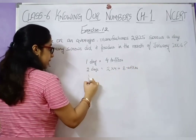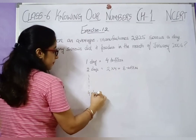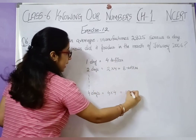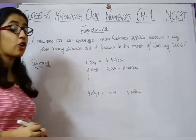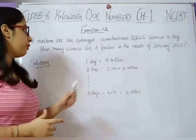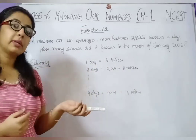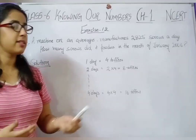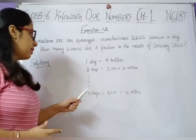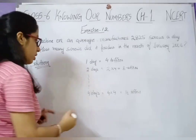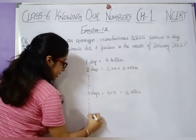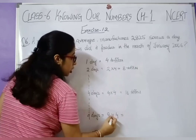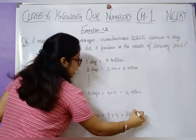Similarly, in 4 days, multiply 4 by 4 to get 16 toffees. In 9 days, multiply 9 by 4 to get 36 toffees. The same logic applies to our question.